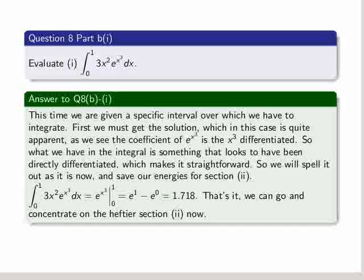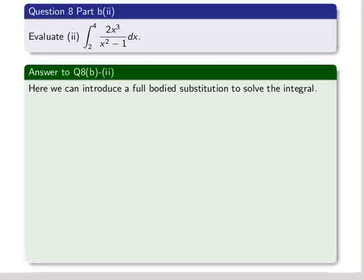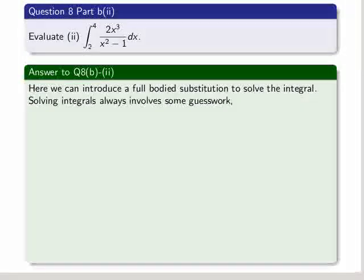We can go ahead and concentrate on the heftier section 2 now. Well, what is this section 2? It's integrating over the interval 2 to 4, 2x cubed all over x squared minus 1 in terms of x.